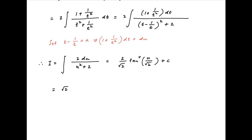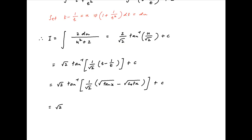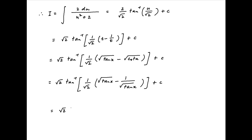Substituting the value of u, i becomes root 2 times tan inverse of 1 upon root 2 times, in brackets, t minus 1 upon t, plus the constant of integration. Substituting the value of t, i is equal to square root of 2 times tan inverse of 1 upon root 2 times, in brackets, square root of tan x minus square root of cot x, plus the constant of integration. This simplifies to square root of 2 times tan inverse of tan x minus 1 divided by square root of 2 times square root of tan x, plus the constant of integration. And this is the required answer.